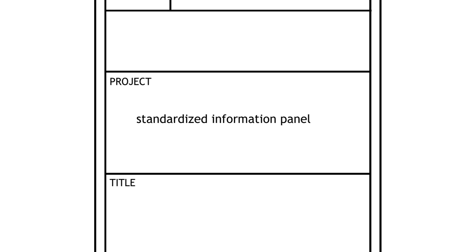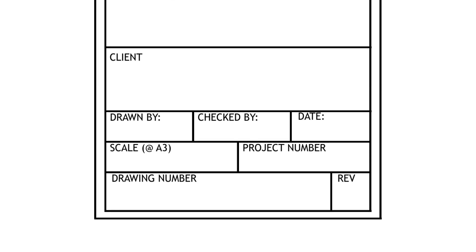Before we start, let's quickly go over what a title block actually is. A title block is a standardized information panel you see on every drawing sheet. It typically shows a project name, sheet number, the date, scale, and who worked on it. It helps keep your documentation organized and professional, especially when collaborating or submitting to clients. Setting it up correctly from the beginning ensures your drawing stays consistent across the entire project. Okay, let's get into it.